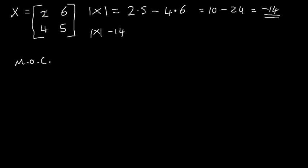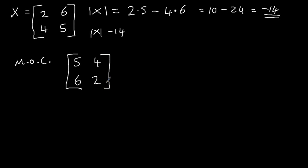Now we need to find the matrix of cofactors. Take each element in turn and look at the diagonals: from two's point of view it sees five, from six's point of view it sees four, from four's point of view it sees six, and from five's point of view it sees two. Then the signs go plus, minus, minus, plus — so that is the matrix of cofactors C.